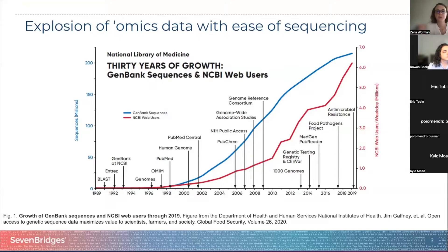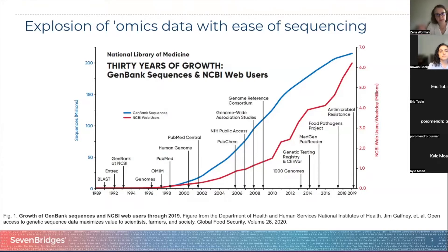This figure shows the growth of GenBank sequencing and NCBI users over the years. We've had an increase in genomic, transcriptomic, proteomics, metabolomics, and imaging data. It's grown so much that it's kind of daunting to think about how to find the data, analyze it, and generate processes or answer a research question using it.